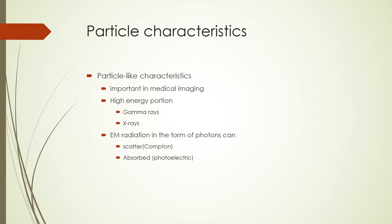Particle-like characteristics of electromagnetic radiation are important in medical imaging. Most of medical imaging involves the higher energy end of the electromagnetic spectrum where particle-like properties are prevalent. Examples of radiation in the higher energy portion are x-rays and gamma rays. Electromagnetic radiation in the form of photons can be attenuated, where attenuation is a combination of scattering and absorption. We shall later learn about the mechanisms of scattering and absorption.